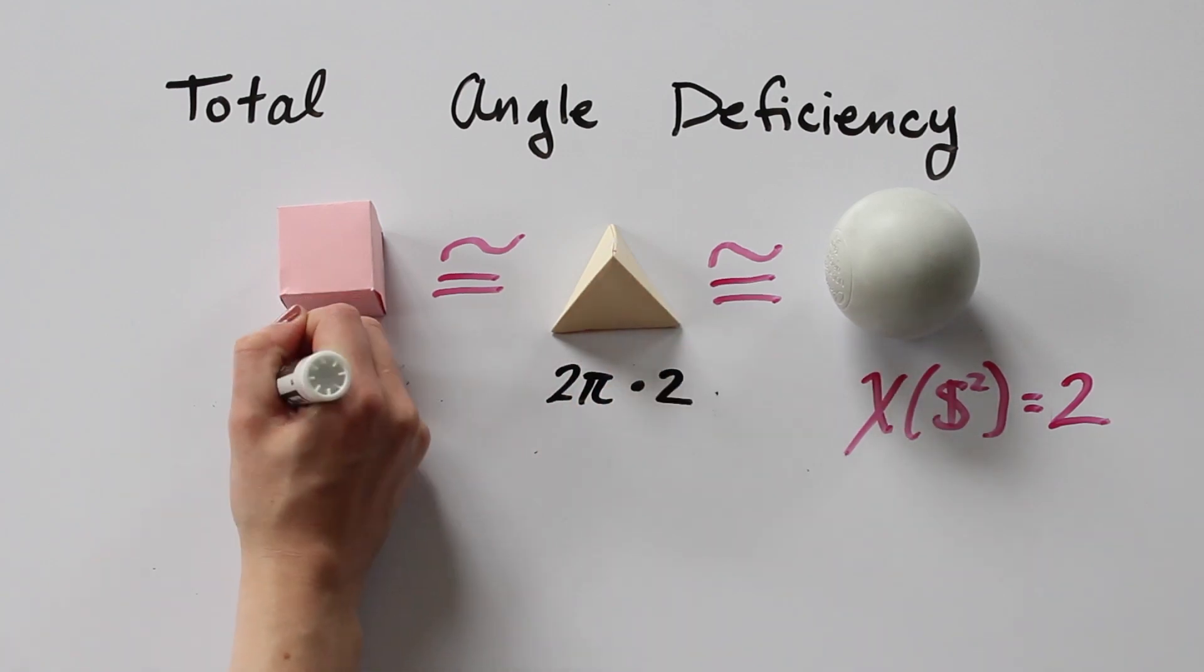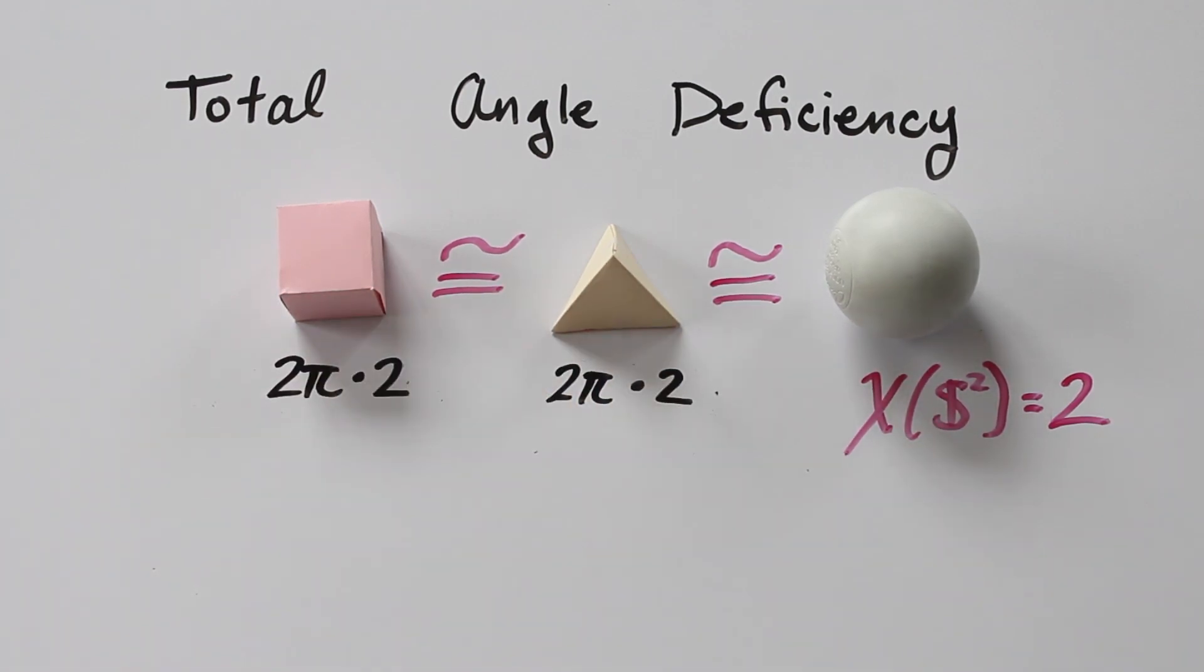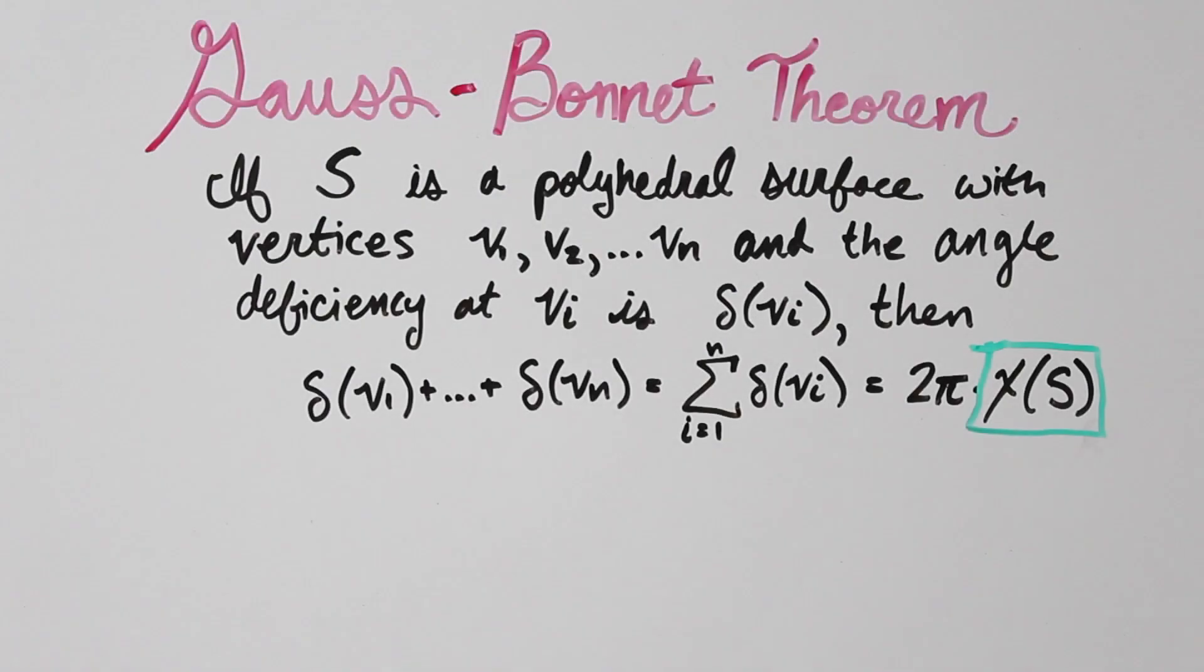This is an example of the Gauss-Bonnet theorem in action. If we have a polyhedral surface S, a surface divided into polygons, that has vertices v1 up to vn, and the angle deficiency at each vertex is δ(vi), then when we sum up the angle deficiency at every vertex, we get 2π times the Euler characteristic of the surface S.